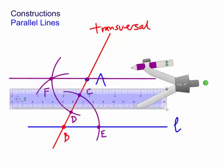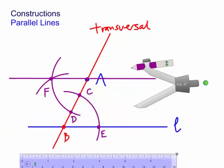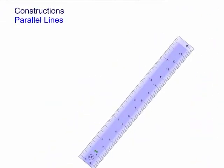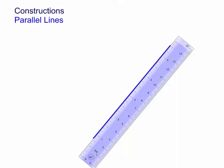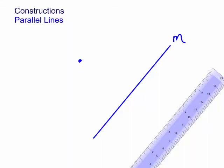Let's actually try and do the same thing on an angle, just to make sure it works. Let's try this for the original line on some sort of angle — you can see it's about 50 degrees. Let's draw our first line and call that line M. We're now going to construct a line through a point — let's call it A over here — through A but parallel to M.